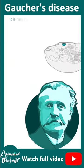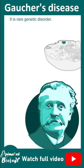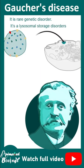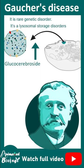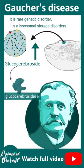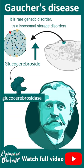Gaucher disease is a rare genetic disorder, also known as a lysosomal storage disorder. The lysosome is involved and there is an accumulation of glucocerebroside, which accumulates because the enzyme that breaks it down doesn't work properly.